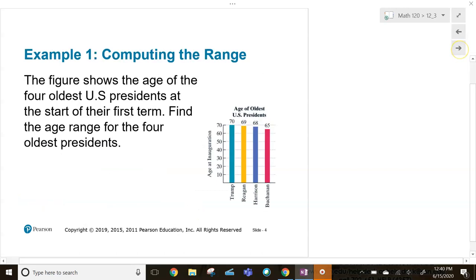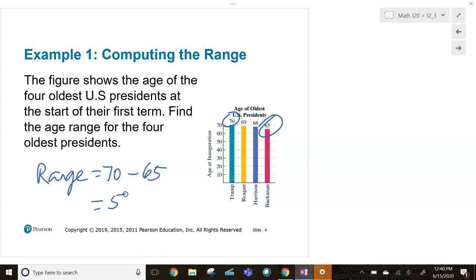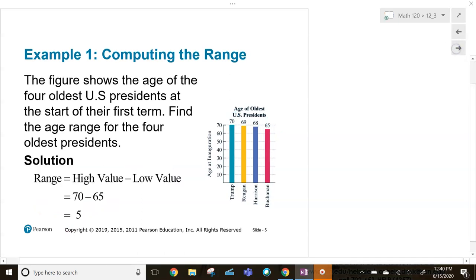That goes too. Here's a figure showing the age of the four oldest US presidents. The range for the four oldest presidents would be the highest one, should be Trump at 70 years old, minus the youngest of the four oldest, which should be Buchanan at 65. So our range here is five years. The age range, five years.